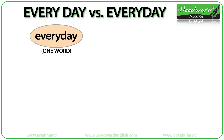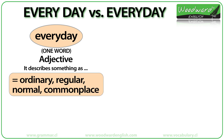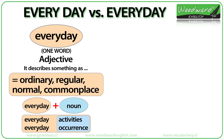Everyday, one word, is an adjective. An adjective normally describes something or gives us more information about it. In this case, everyday describes the noun or thing that comes after it. Everyday means ordinary, regular, normal, or commonplace. Since everyday is an adjective, it appears before a noun: everyday plus noun. For example: everyday activities, everyday occurrence.